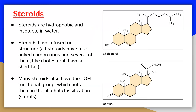All steroids have four linked carbon rings, and several of them, like cholesterol, have a short tail. Many steroids also have the OH functional group, which puts them in the alcohol classification.